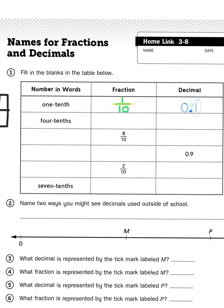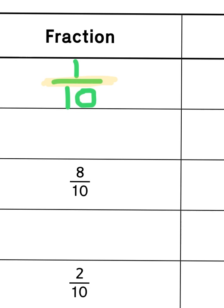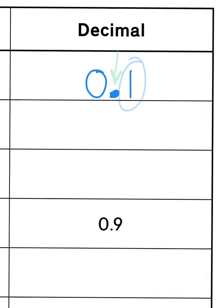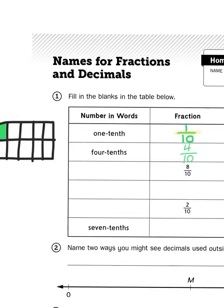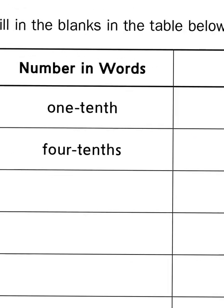So, decimal notation of fractions is just another way of representing the same idea. In our second row, it says 4 tenths. So, I would write the fraction 4 over 10, just like we did with 1 tenth. And then, over here, in the decimal form, I would write 0.4. And again, whenever I see a digit on the right-hand side of a decimal point, I know it's always a fraction out of tenths.